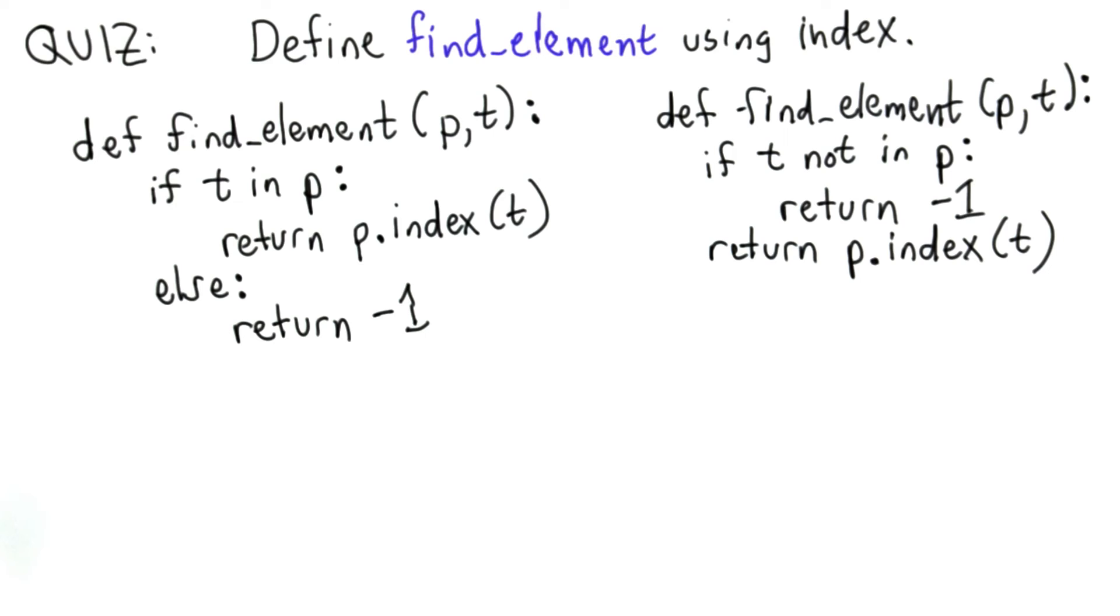So we've seen four different ways to define the findElement method. They all have the same behavior, but we've defined it once with a while loop, once with a for loop, and two different ways using the index method. When we use index, we need to use an if statement as well to make sure that we produce the right result for the case where the element is not in p.